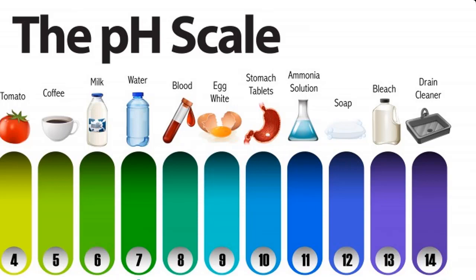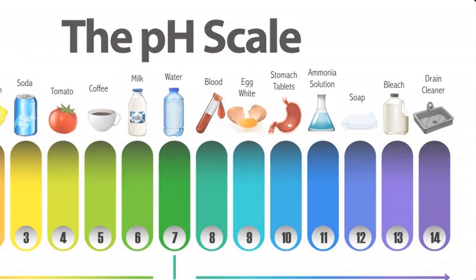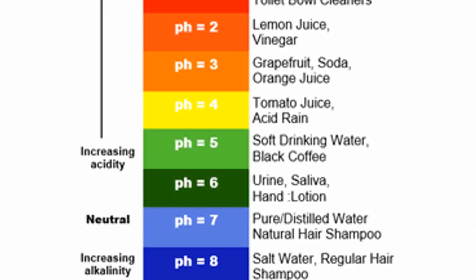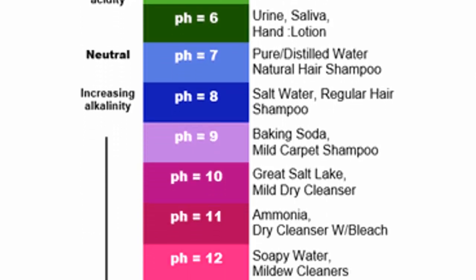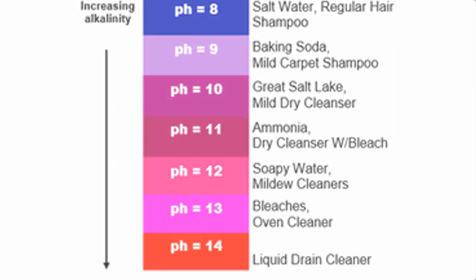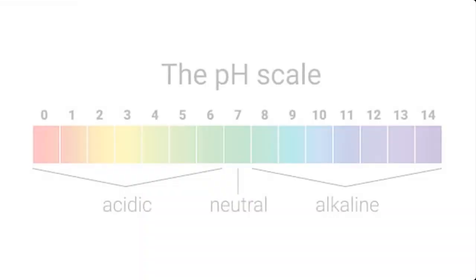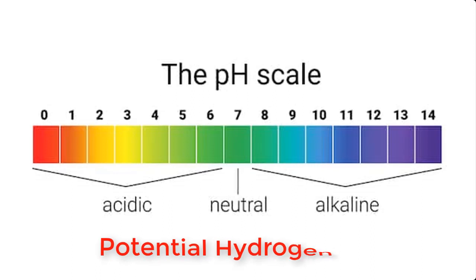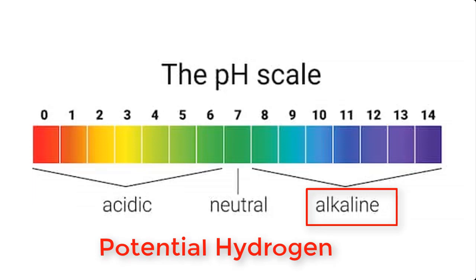Before we go into how to test the pH of your liquid soap or any other product, let's try to understand the basic chemistry of pH of a solution. Now pH, which literally means potential hydrogen, is a term used to describe the degree of acidity or alkalinity of a solution.